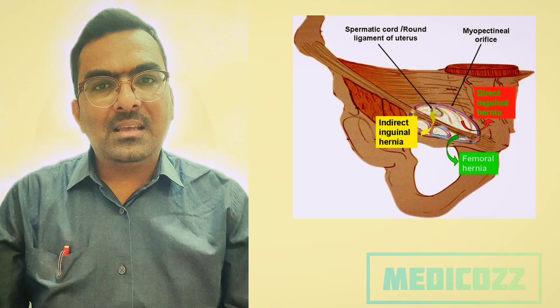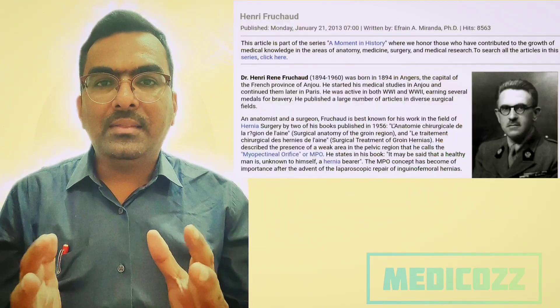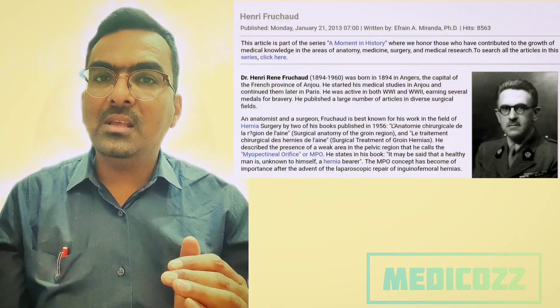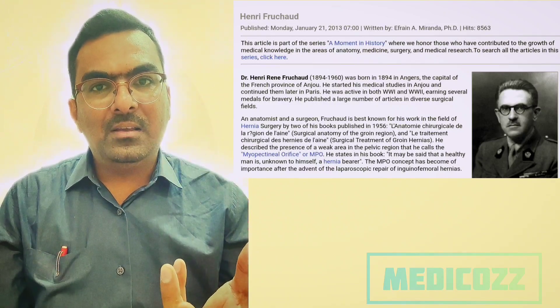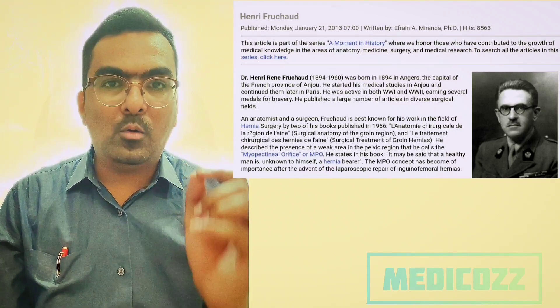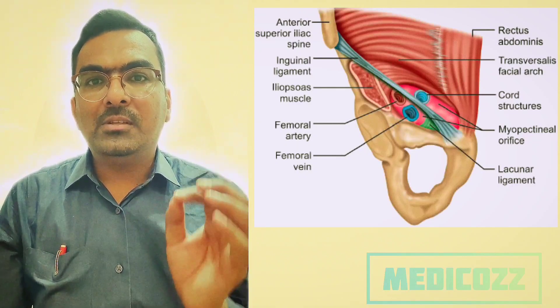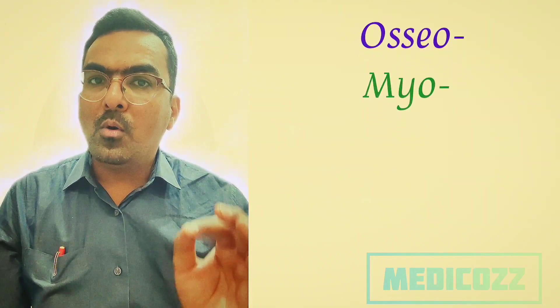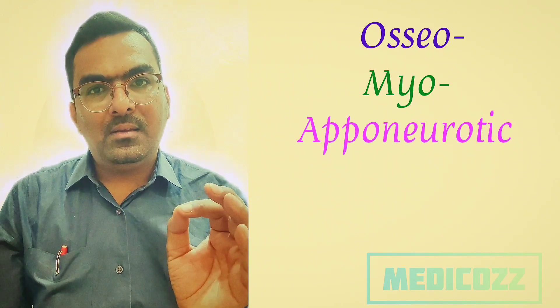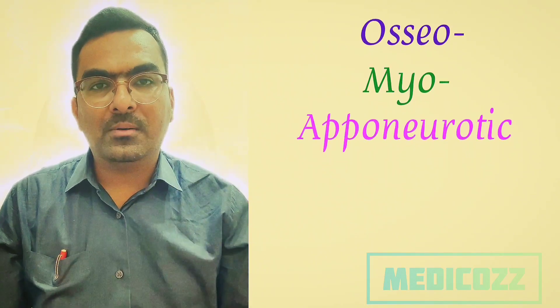In 1956, Henry Froucard postulated that all groin hernias essentially originate in a single weak area which he called the myopectinial orifice. This is a funnel-like potential space, the myopectinial orifice, where all inguinal and femoral hernias occur.